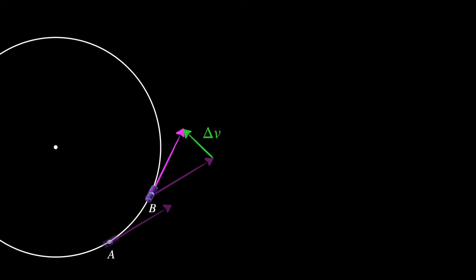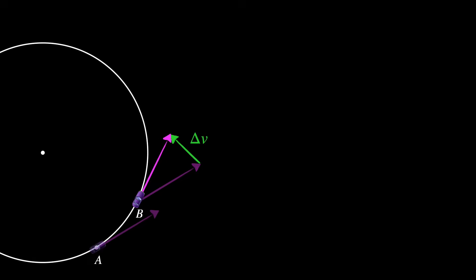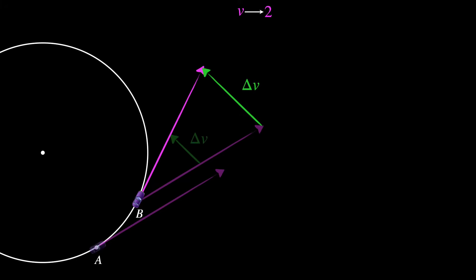Let's begin by tinkering with the speed. Let's say we double the speed of the car. What will happen to our change in velocity, delta v? Well, first, because the speed is doubled, the velocity vectors now become double in size. And so immediately, you can see that the change in velocity delta v also increases. I'm guessing it also doubles in size. But we're not here to do guesswork — we can do more than that.